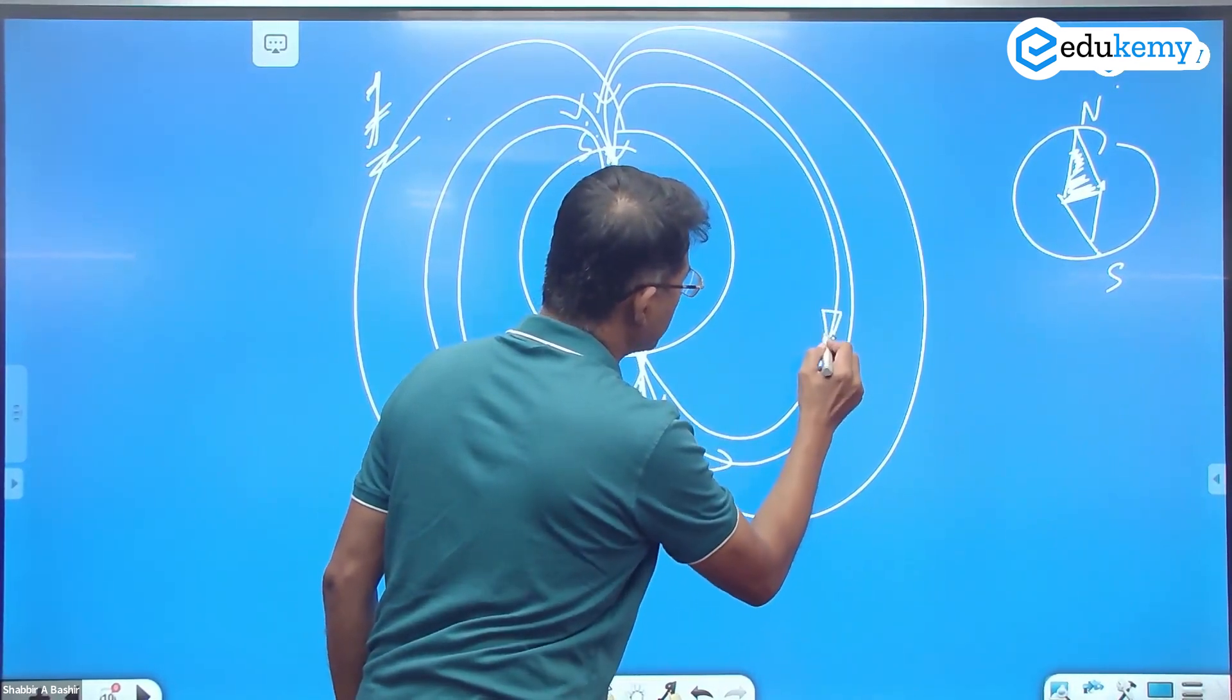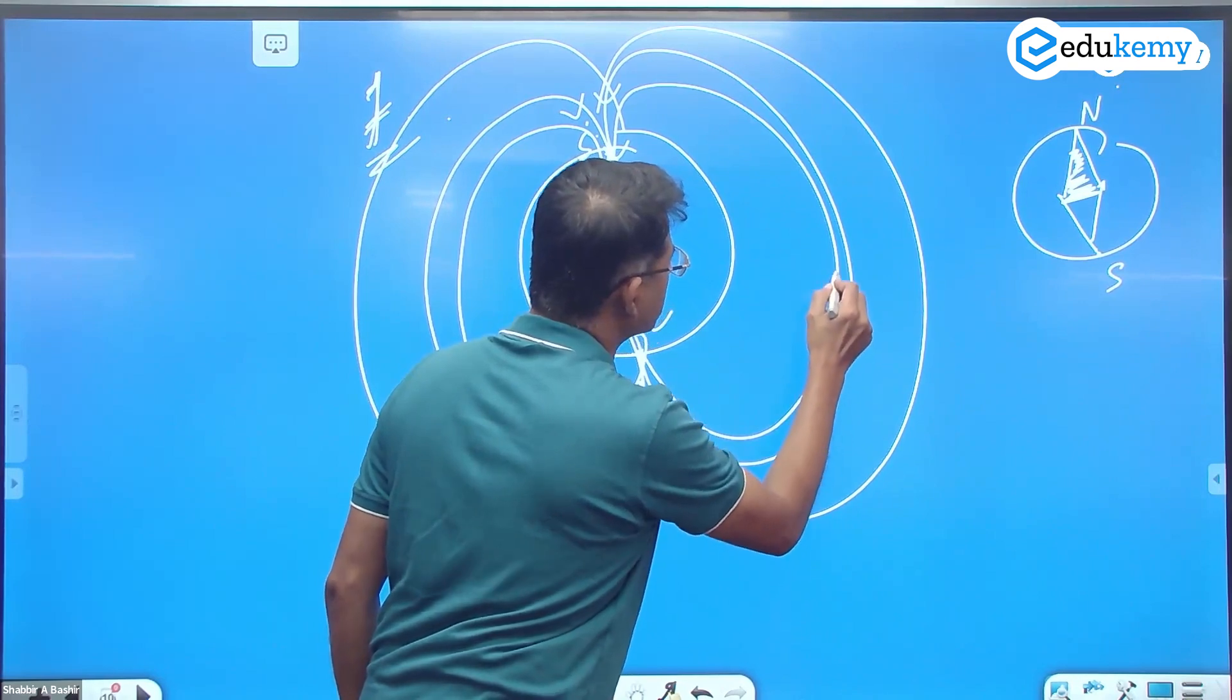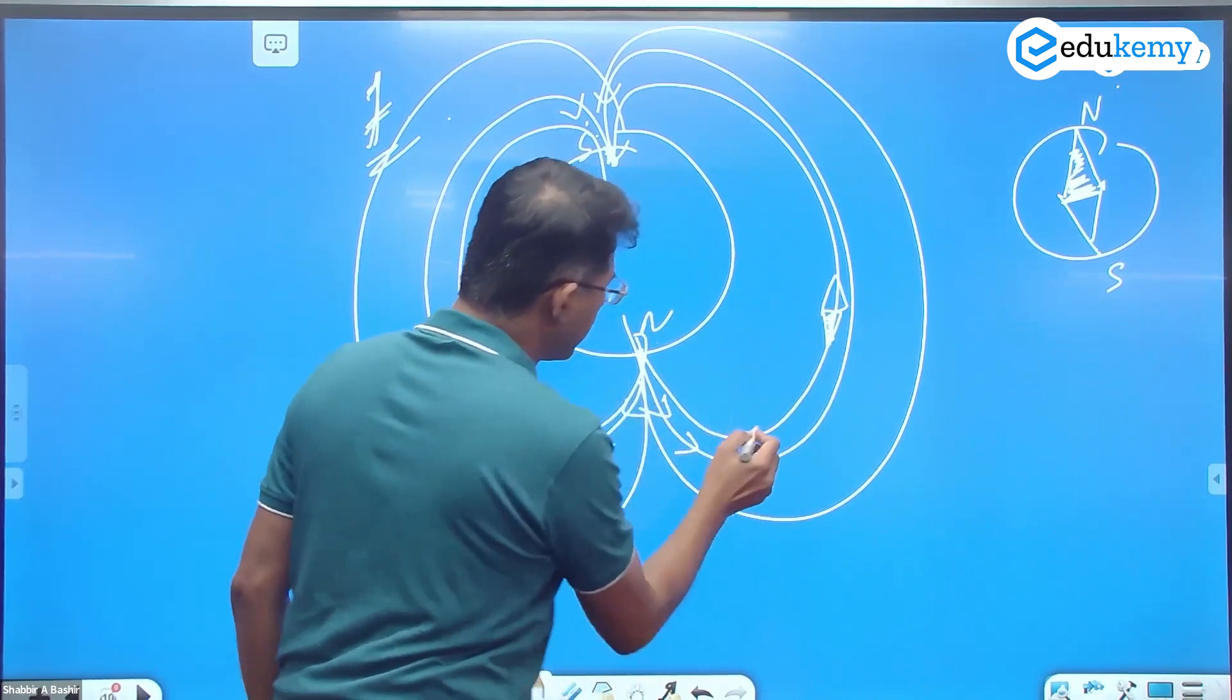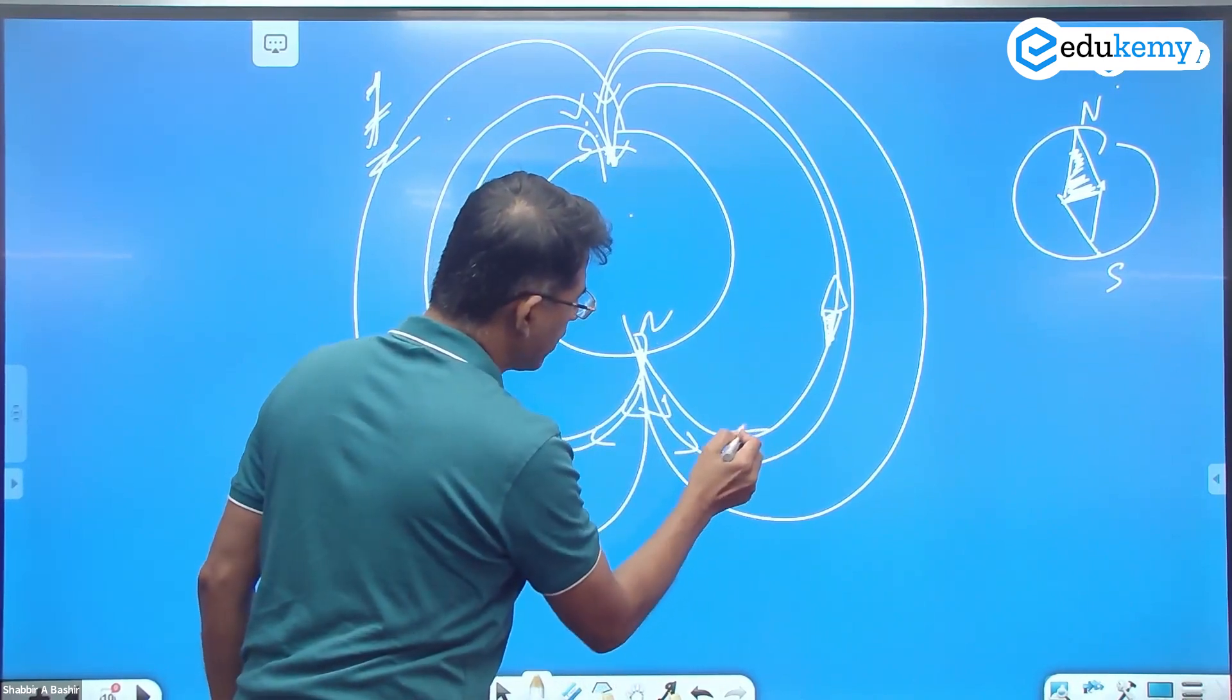So jagar yeh hai, the needle will point like this. This is north and this is the south. You bring it here, the needle will point like this.